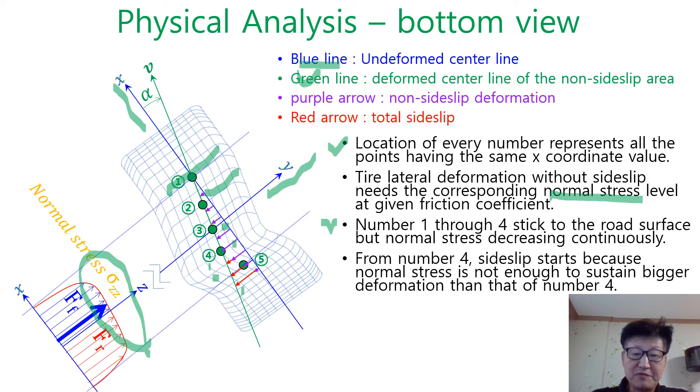From number 4 here, side slip starts because normal stress is not enough to sustain the big deformation than that of number 4.